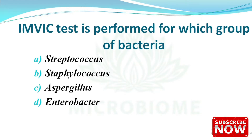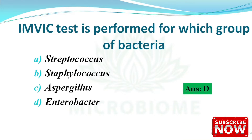Next: the IMVIC test is performed for which group of bacteria? The options are Streptococcus, Staphylococcus, Aspergillus, and Enterobacter. The right answer is option D — Enterobacter. IMVIC stands for Indole, Methyl Red, Voges-Proskauer, and Citrate. The IMVIC test is useful for differentiating E. coli, Enterobacter aerogenes, Enterobacter cloacae, and Klebsiella pneumoniae.